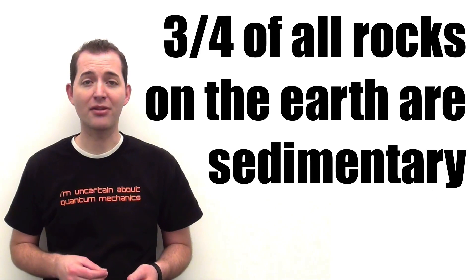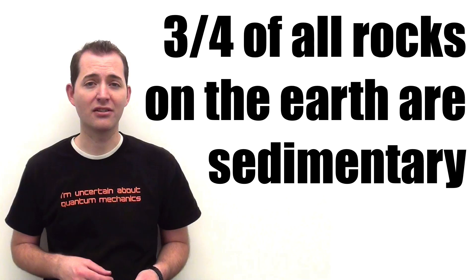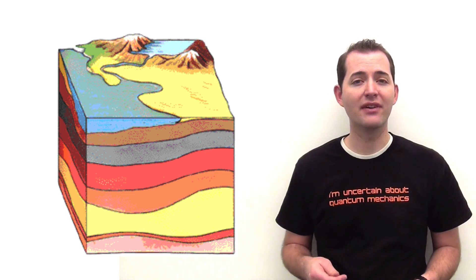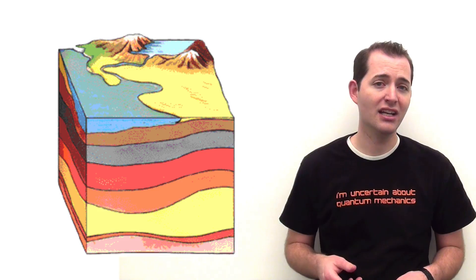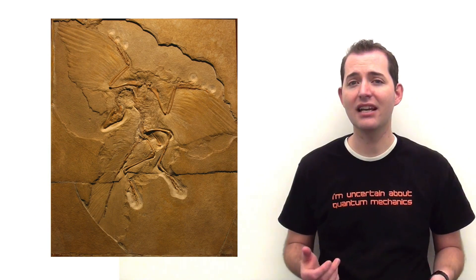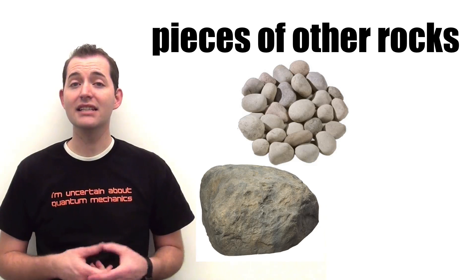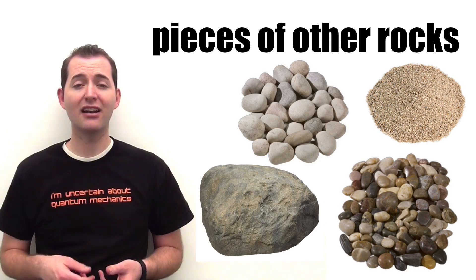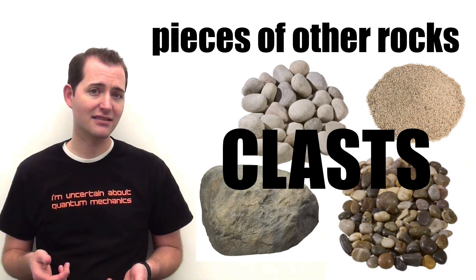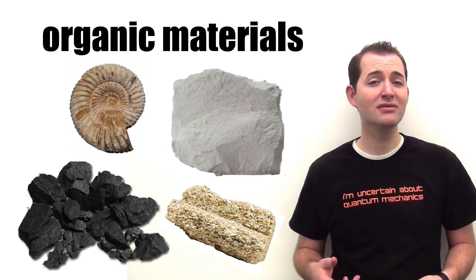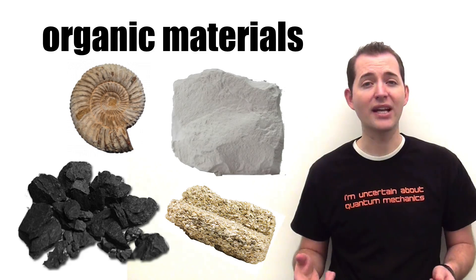Sedimentary rocks make up about three-quarters of all of the rocks on the Earth's surface. They also preserve a historic record of the environment at the time of their formation and are the only rocks that contain fossils. Sedimentary rocks are most often formed from pieces or chunks of other rocks. These pieces come in various sizes and are referred to as clasts. Sedimentary rocks can also be made from mineral crystals and even organic material such as bones, skeletons, shells, or even plants.